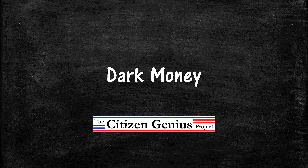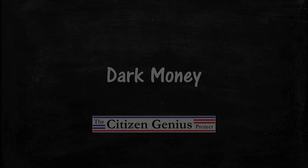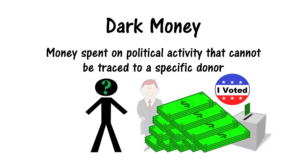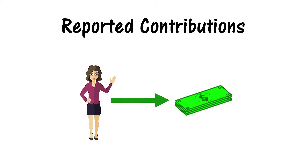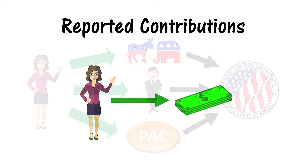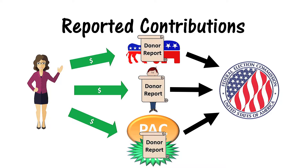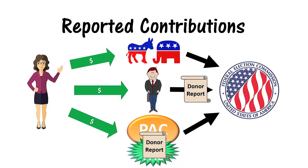Dark money, presented by the Citizen Genius Project. Dark money refers to money spent on political activity that cannot be traced to a specific donor. This money is used to influence elections and politicians. Much of the money spent on federal elections in the US is traceable — contributions to candidate committees, political party committees, and PACs including super PACs are reported to the Federal Election Commission, including the name of the donor.